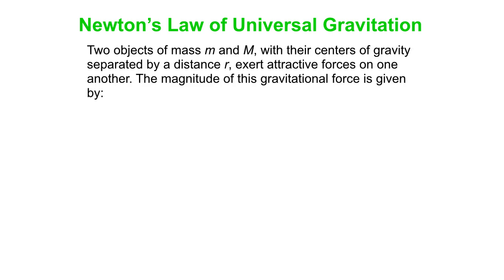Newton's Law of Universal Gravitation: we have two objects that have mass — one of mass little m, one of mass big M — and their centers of gravity are separated by a distance r. They exert attractive forces on one another.